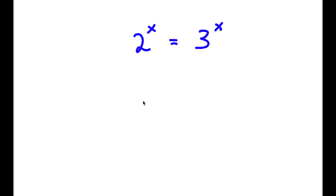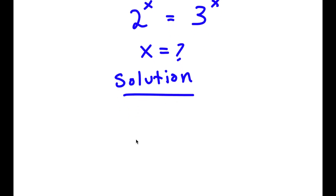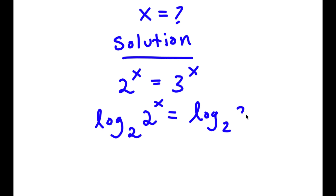In this problem, I have 2 to the power of x is equal to 3 to the power of x. I obviously want to find the value of x. So I'm going to first start by writing 2 to the power of x is equal to 3 to the power of x, and I'm going to take the log of base 2 on both sides. So now I have log base 2 of 2 to the power of x is equal to log base 2 of 3 to the power of x.